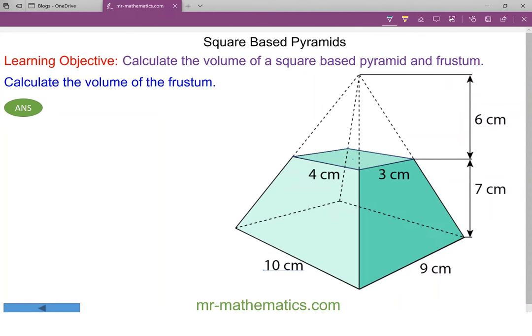In this lesson we're going to calculate the volume of a frustum using two rectangular based pyramids. We begin with the formula: volume is one third of the length times the width times the height. Students would have discovered this formula at the start of the lesson.